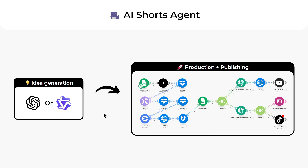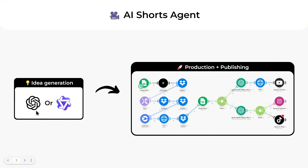Without further ado, let's get started with the actual tutorial. First, we need to extract 100 viral quotes from a YouTube video's transcript, and you can do this by using ChatGPT or Quen AI. For this tutorial, I'll be using Quen AI, but you can also use ChatGPT.